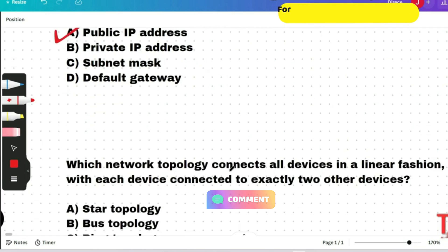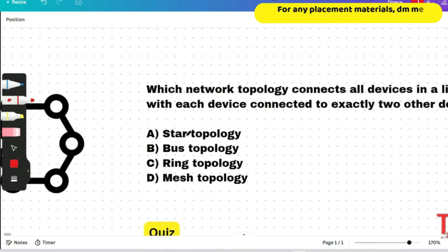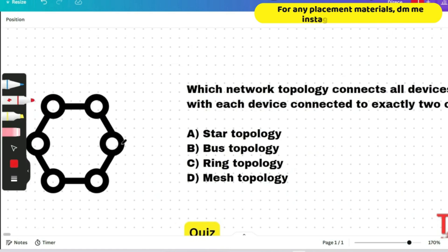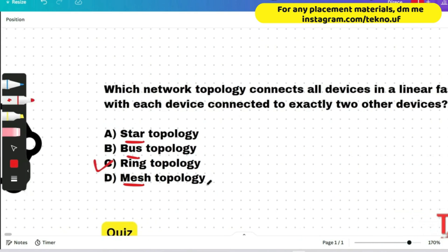Which network topology connects all devices in a linear fashion with each device connected to exactly two other devices? The image shows the answer — ring topology will be the correct answer. In a ring topology, each device is connected to exactly two other devices in a linear fashion. All the names suggest what the answer will be; if you know the English meaning of star, ring, or bus, you will be able to answer the question.